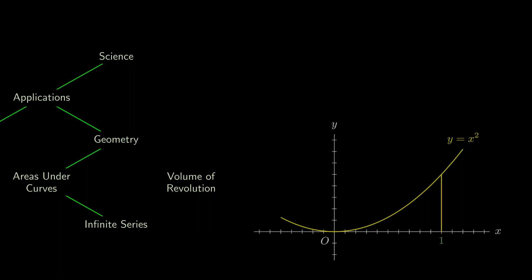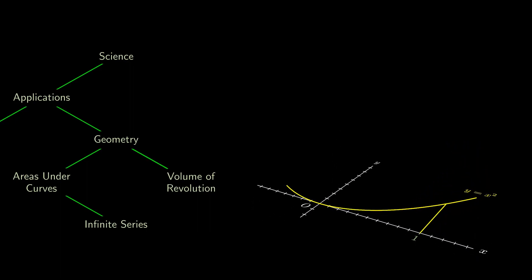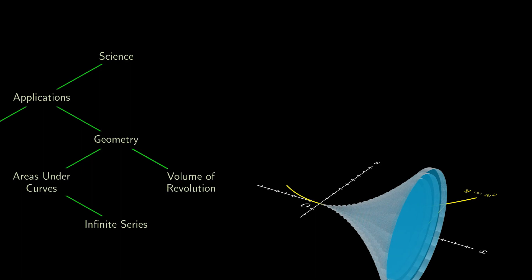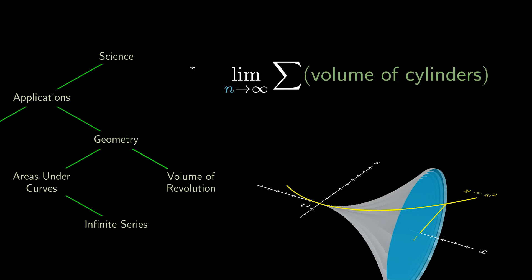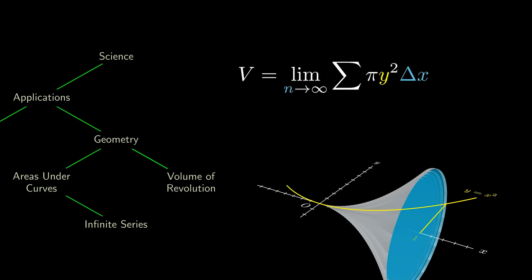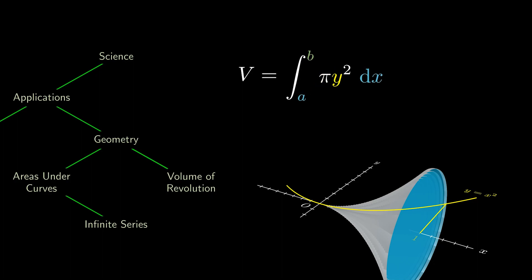Another interesting quantity is the volume of revolution, where we can take a bunch of cylinders and make them finer and finer, so that the result looks like a solid obtained by revolving the curve. What is the volume of this final object? Since each cylinder has radius y and height delta x, letting n go to infinity, the sum becomes an integral and the delta x becomes a dx. Finally, to be precise, we integrate from a to b to obtain the volume of revolution.